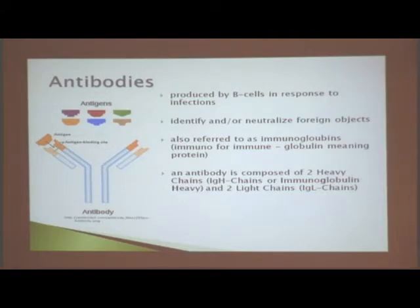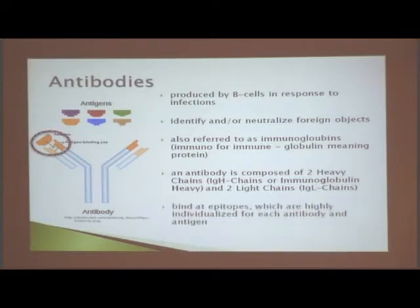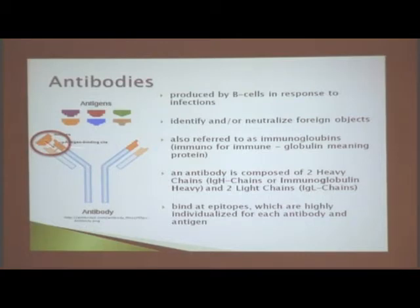An antibody is composed of two heavy chains, which are the long ones — that's why they're known as IgH chains, or immunoglobulin heavy — and then two light chains, called immunoglobulin light chains, or IgL chains. Whenever an antigen is in the body and it binds to an antibody, the antibody has a specific structure that's only specific to the particular antigen it's trying to bind to, and when an antigen and an antibody bind, they bind at epitopes.